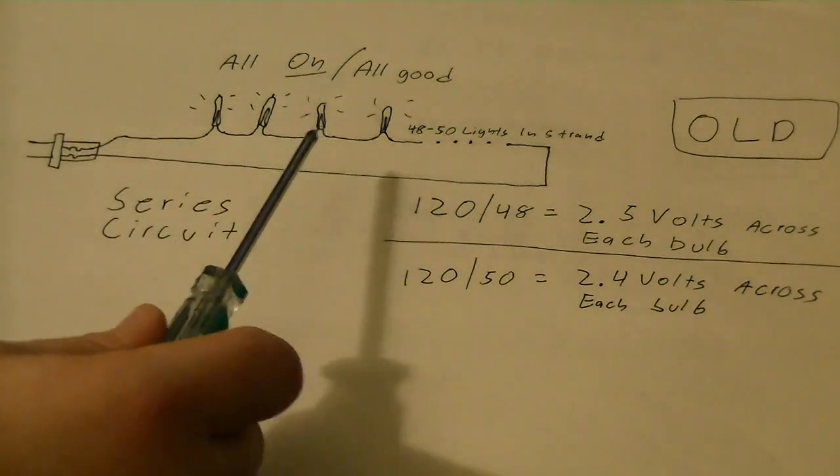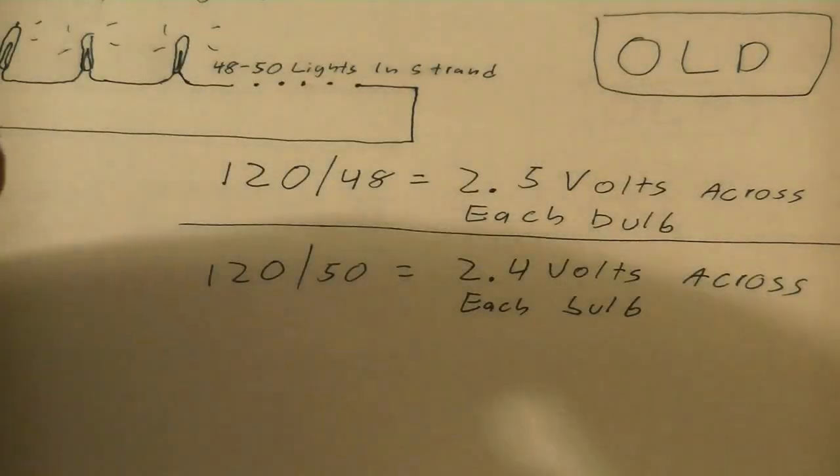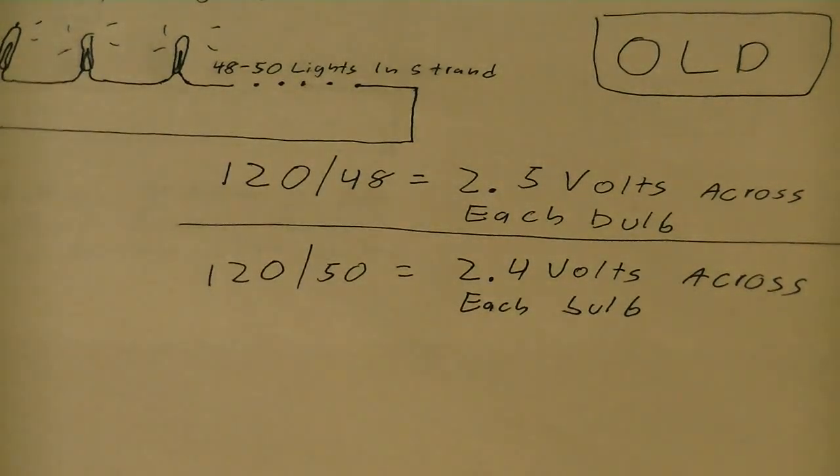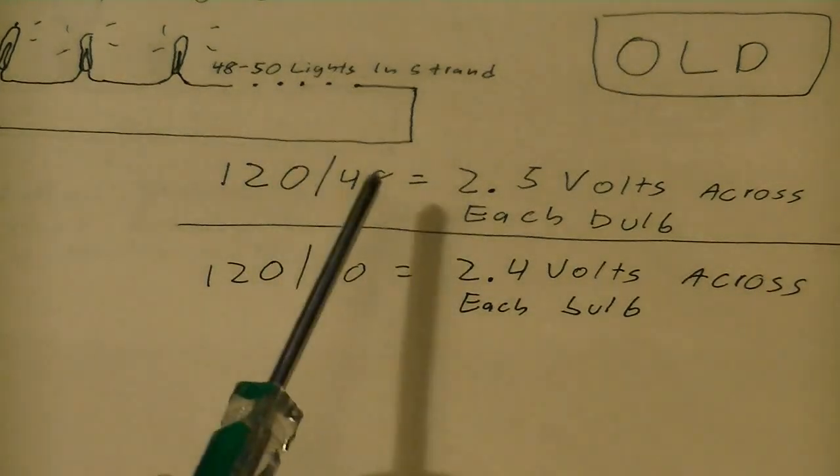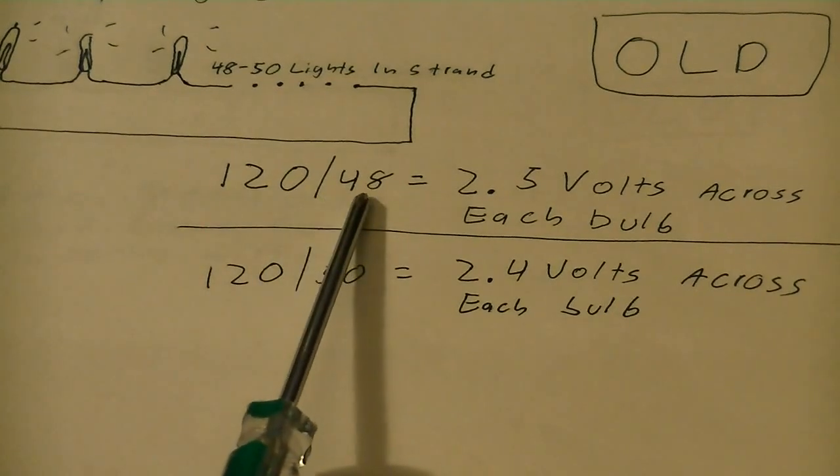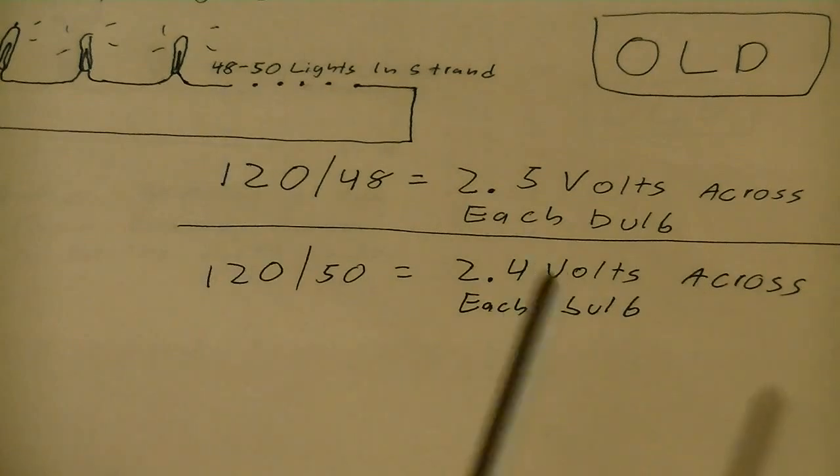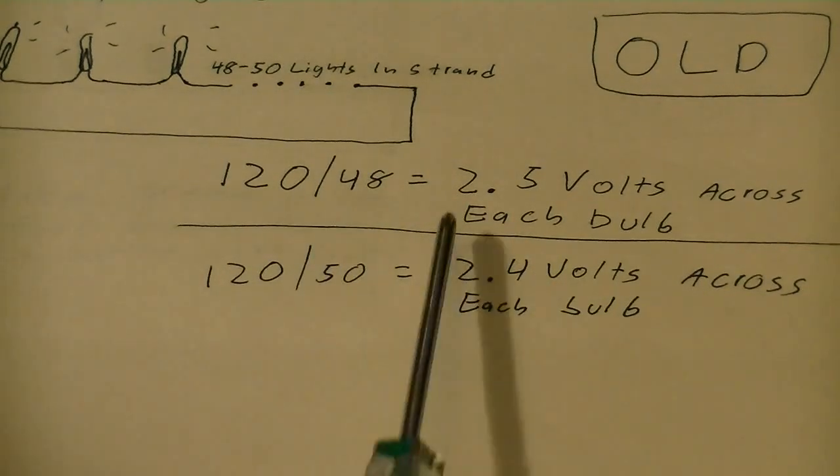When you buy replacement bulbs you'll notice it says rated for 2.5 volts. The reason for that is the standard for years was 48 bulbs. 120 volts divided by 48, because the resistance from each bulb is the same, so the voltage drop across each bulb is the same, and it comes out to 2.5 volts across each bulb.